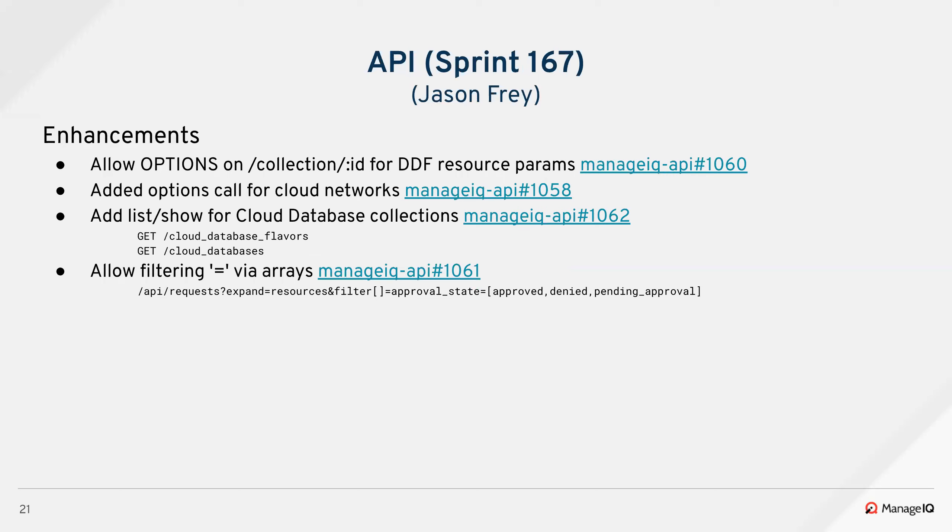So last sprint for the API: Adam added an options call for the collection ID for DDF resource parameters. Gilbert added an options call for cloud networks. Adam added a list and show for cloud database collections. And Nick L allowed filtering via equals sign for arrays.